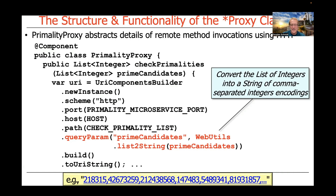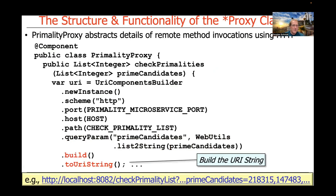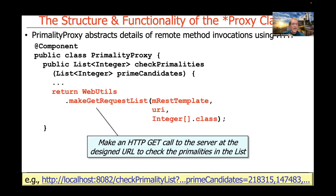As shown in the summary at the bottom, we call the build method, which builds a new URIComponents object based on everything provided using the fluent interface builder pattern, then convert it to a URI string — for example: HTTP localhost:8082/checkPrimality?primeCandiates=<comma-separated integers>. After building that URI, we call our helper method makeGetRequestList, passing in the REST template and the constructed URI. The expected return value is an array of integers, which is converted into a list of integers and returned.